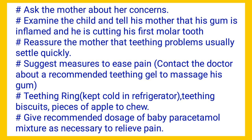Then, as per the next task, you can suggest a teething ring. You can say: there is something called a teething ring which you need to keep in the refrigerator. And there are teething biscuits that you can give to him — he can bite on them so the gum will erupt and the teeth will come out.